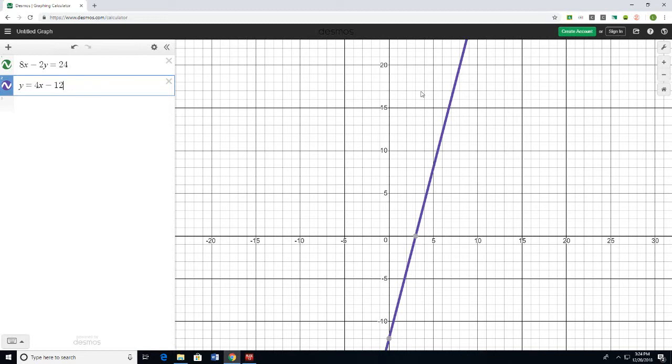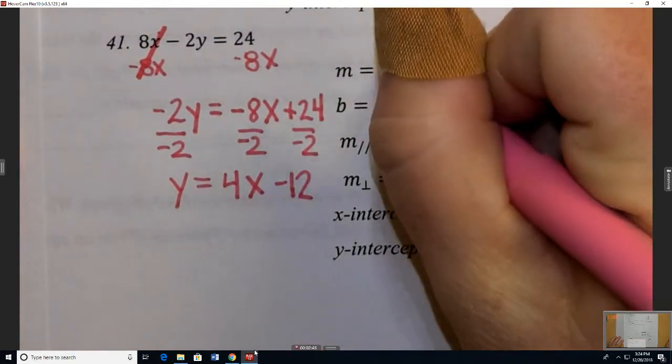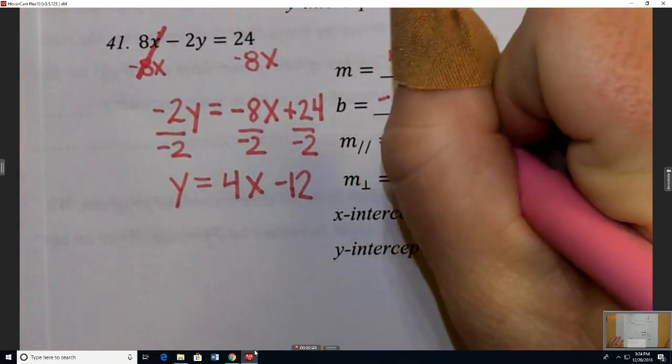What's really nice is then when we write it in slope-intercept form, we can quickly identify the m and the b. Because the m is the number we get next to x, so m is 4, and the b is the number we get by itself, or negative 12.